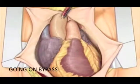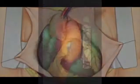Cardiopulmonary bypass is commonly used in heart surgery because of the difficulty of operating on the beating heart. Bypass is a technique that temporarily takes over the function of the heart and lungs during surgery, maintaining the circulation of blood and the oxygen content of the body. Any operations requiring the opening of the chambers of the heart require the use of cardiopulmonary bypass to support the circulation during that period.